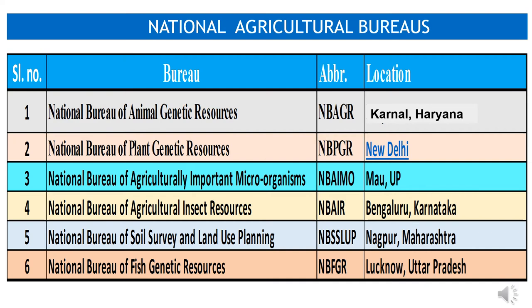Now to study National Agriculture Bureaus. First is NBAGR — National Bureau of Animal Genetic Resources — headquartered at Karnal, Haryana. NBAGR works in the fields of animal and livestock development and resources, with divisions including Animal Genetic Resource Division, Animal Genetic Division, Animal Biotech Division, and Livestock Information Management Unit and Networks.